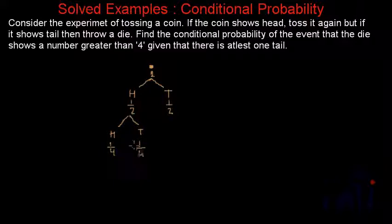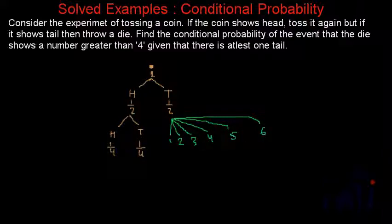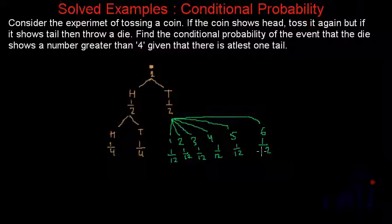But if we get a tail in the first toss, we have to throw a die. And if we throw a die, we are going to get 6 total outcomes. We can get either 1, 2, 3, 4, 5, or 6. Each of them will have probability equal to 1/6 of 1/2, that is 1/12. So this will be the complete tree of the event.